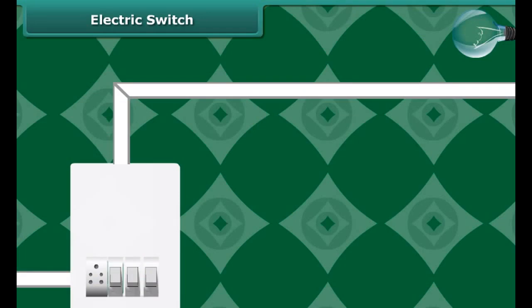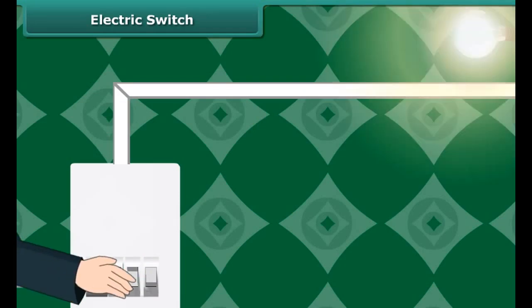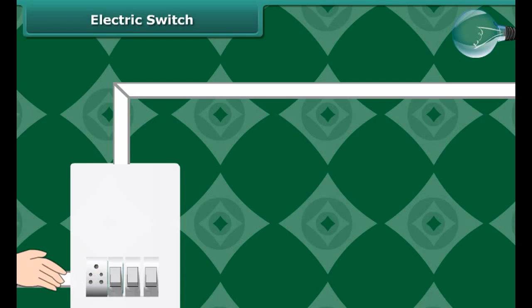Electric switch. We put a switch on or off whenever we want to use or not the electric appliance such as the fluorescent tube, fan, AC, etc.